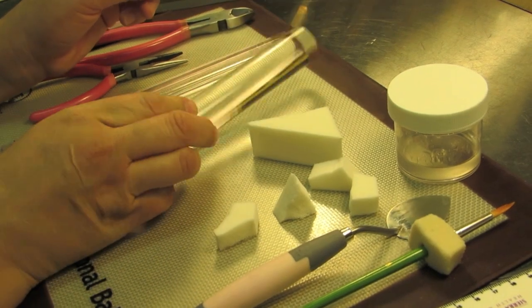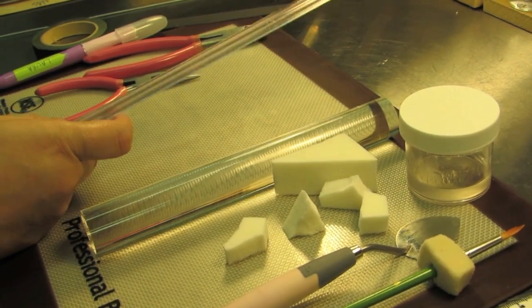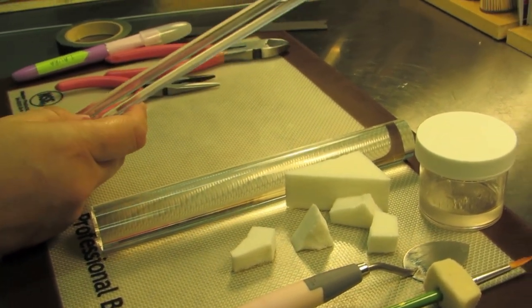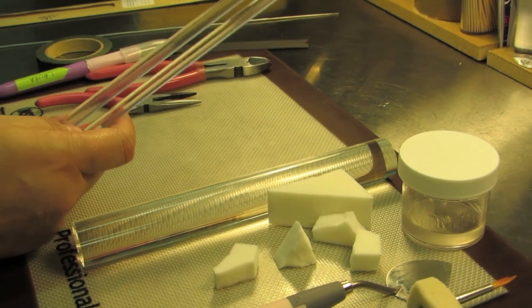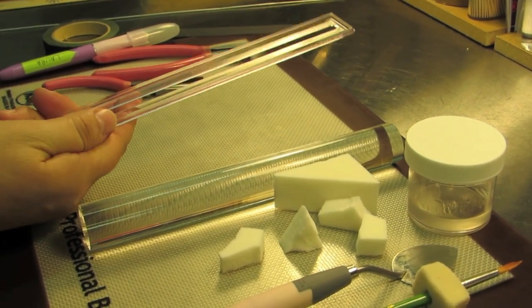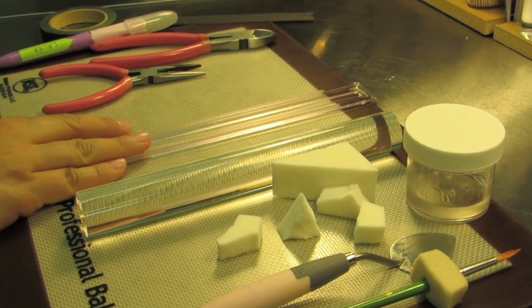You're going to need a rolling pin to roll out your gum paste. If you have the Alphabet Cutters from FMM, you'll know that your cutters came with this strip cutter and I love this thing. If you don't have a strip cutter, then you will just use your ruler and a blade to cut even sized strips.